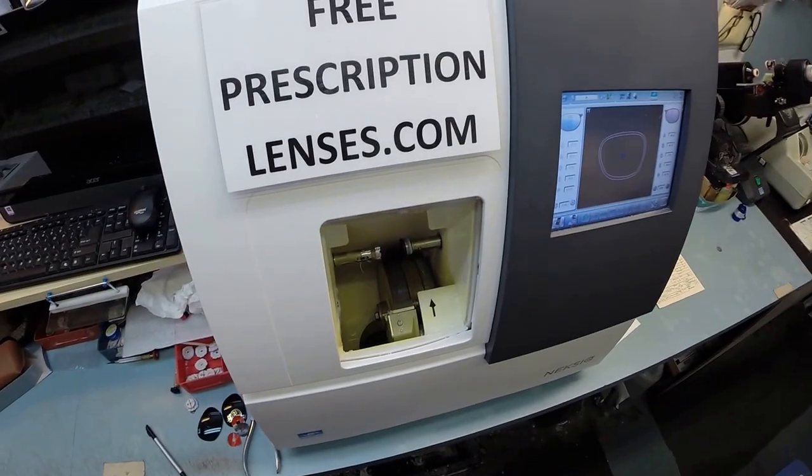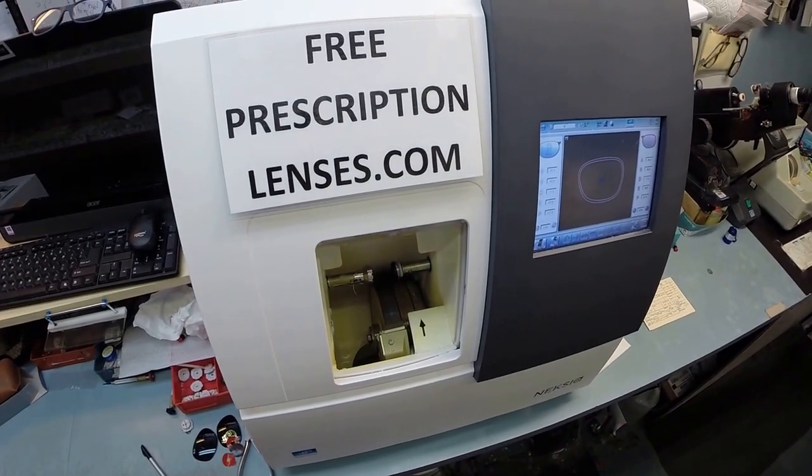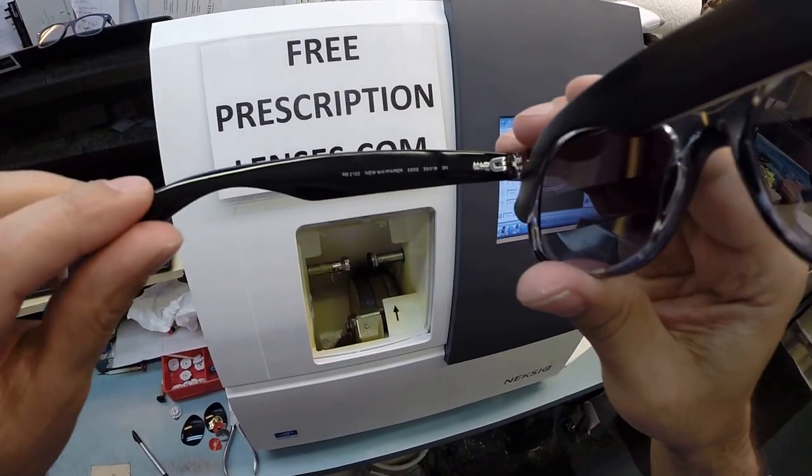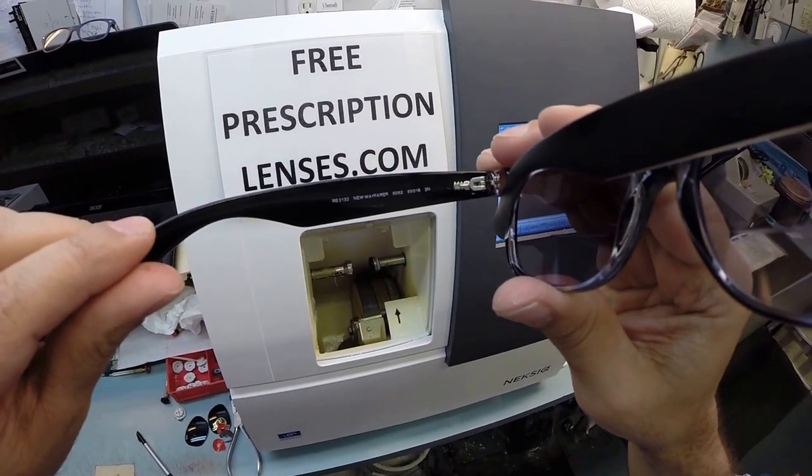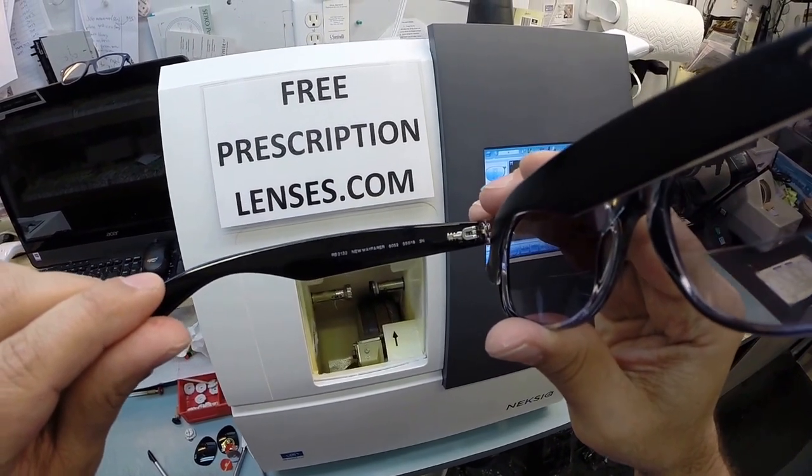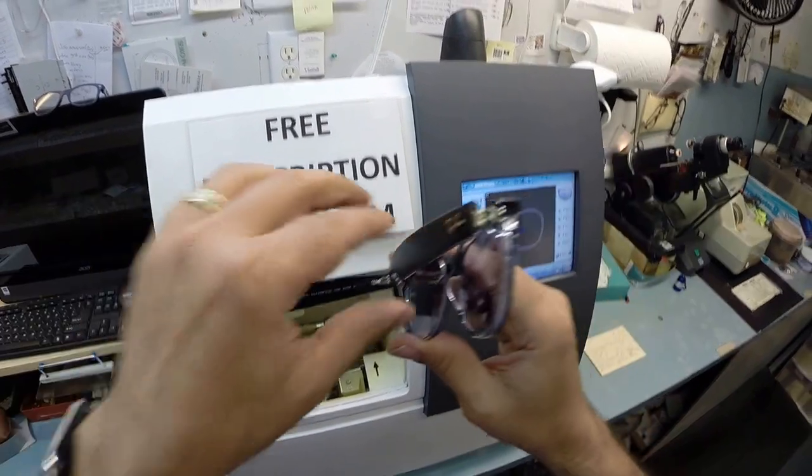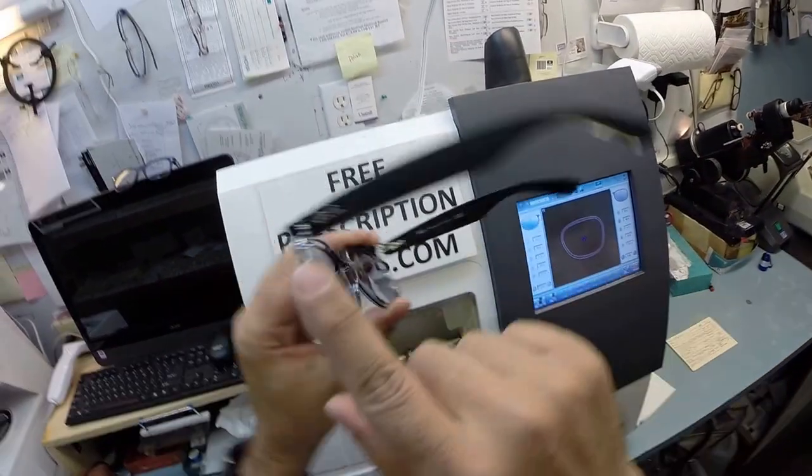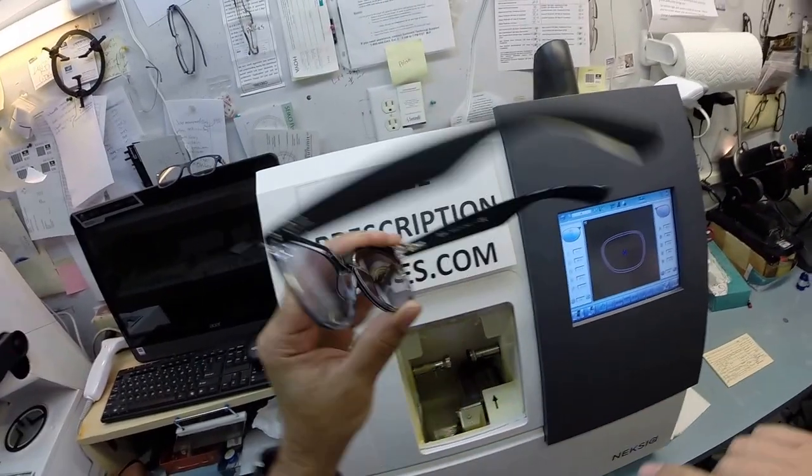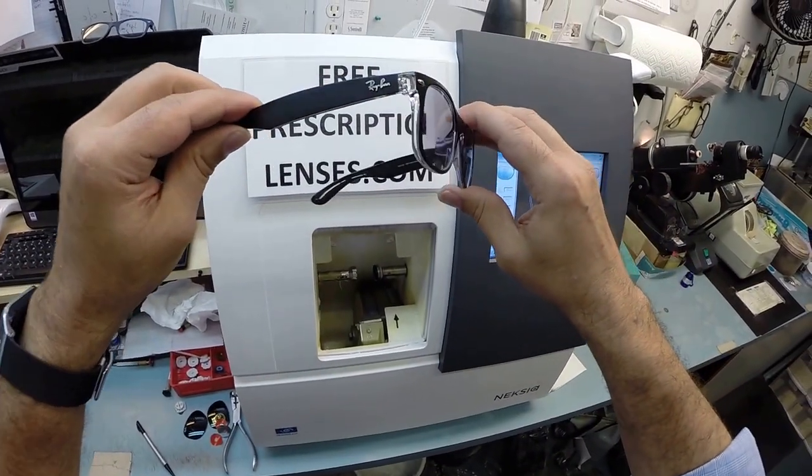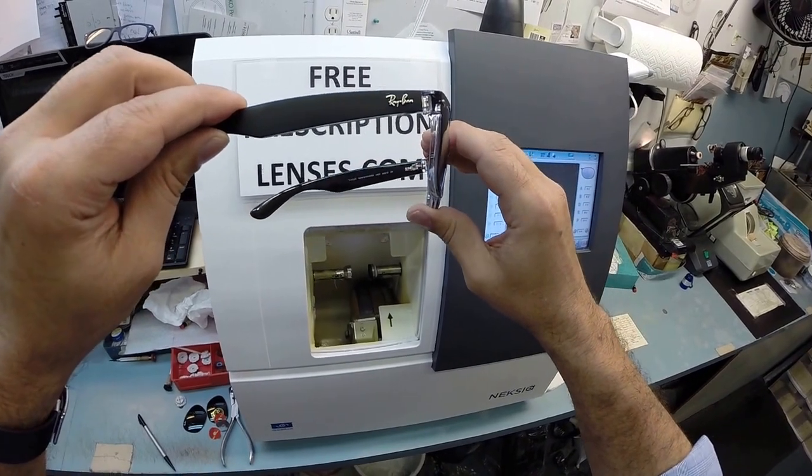If anyone has any questions about what I can or can't do, just email me at freeprescriptionlenses at gmail.com. My neighbor Francisco, I hope you enjoyed watching as I made transition bifocals for your Ray-Ban 2132 New Wayfarer in the color 6052, which is the black crystal in the larger 55 eye size. You see the black front with the crystal sides. So that is that. And hopefully everyone else has got the chance to see how I bring that love and feeling back to glasses. Thank you.